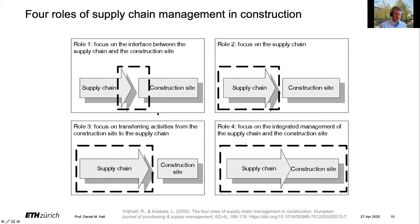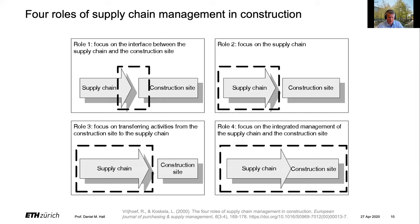As you saw in the reading, there are four roles of supply chain management in construction. This applies to all construction, not necessarily just industrialized construction. The first is the interface between the supply chain and the construction sites. The focus here is about reducing the costs and durations of site activities and making sure there's no impact on the delivery or availability of the supply chain.